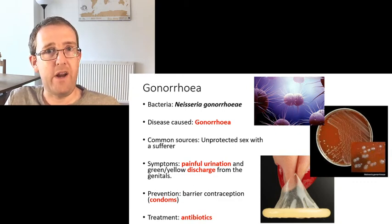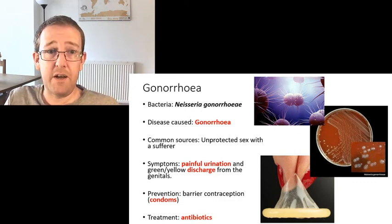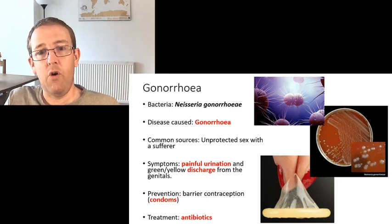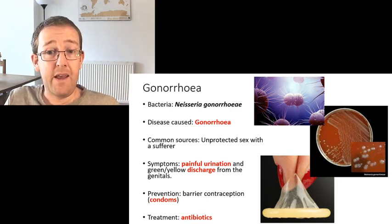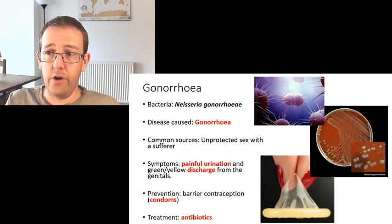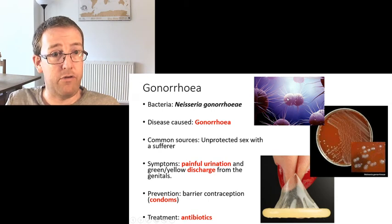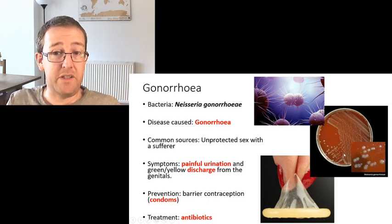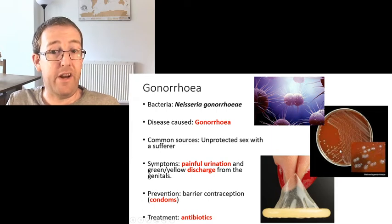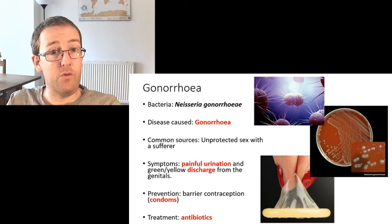Prevention is through barrier contraception, i.e. condoms - things that are going to stop anything moving from one person to another. If you do have it, antibiotics are the treatment. However, it's been noted a lot in the media and medical press that gonorrhea is becoming ever more resistant to antibiotics, creating strains being referred to as 'super gonorrhea.' The bacteria looks spherical - a coccus shape rather than the rod shape of salmonella - and it makes white streaks on blood agar.